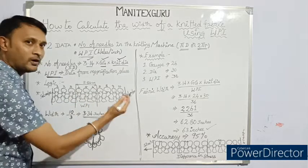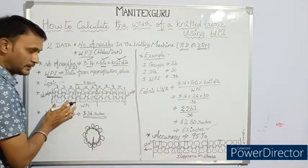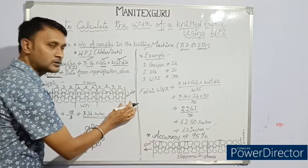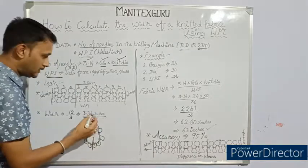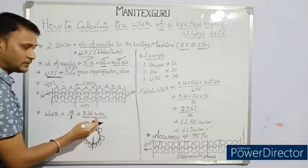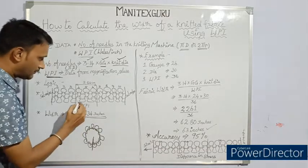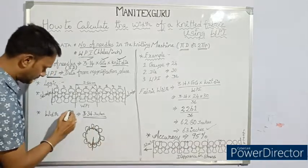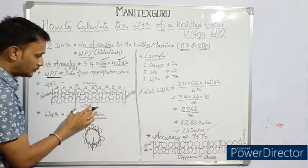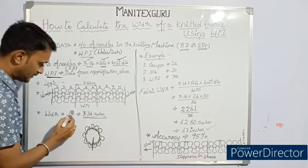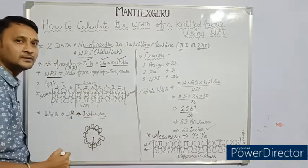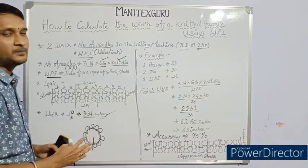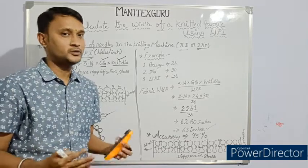So if there are three loops in one inch, then 10 loops will be in how many inches? First three is one inch, the next three is second inch, the next three is third inch, and the fourth one is one third. That is nothing but 3.34 inches. We can easily calculate this using the number of loops or the number of needles in the knitting machine. We have 10 needles divided by wales per inch which is 3, so we get 3.34 inches. This is the logic behind this concept for calculating the fabric width using wales per inch.